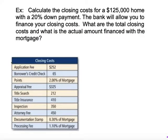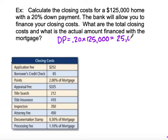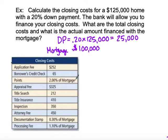For our first example, we're going to calculate the closing costs for a $125,000 home that we're going to put 20% down on. The bank is going to allow us to finance the closing costs — not all banks will do that, so you need to make sure you won't have to pay closing costs out of pocket. Our down payment is 20% of $125,000, which is $25,000. That means my mortgage loan or principal is going to be $100,000. Every percentage-based fee will be calculated off that $100,000 since the $25,000 is already paid to the bank.